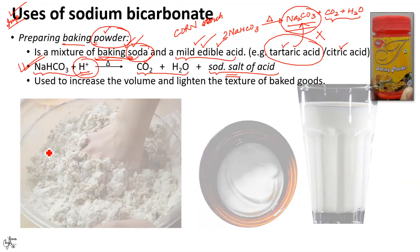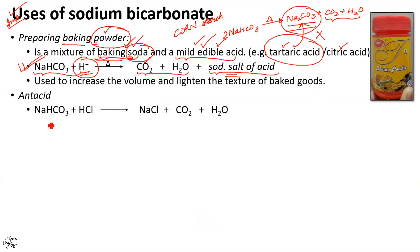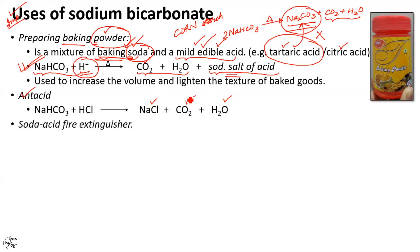Baking soda also finds use as a common antacid to treat acid indigestion and heartburn. It reacts with stomach acid to produce salt, water and carbon dioxide. Sodium hydrogen carbonate also finds use in soda acid fire extinguishers. For further details, you can go through the link provided on top where this type of extinguisher is already explained.